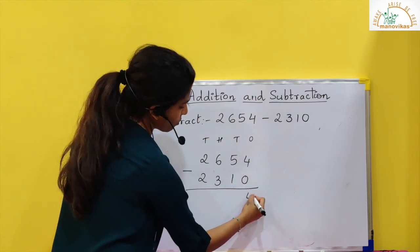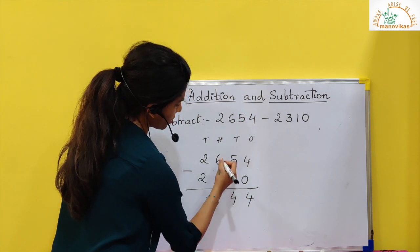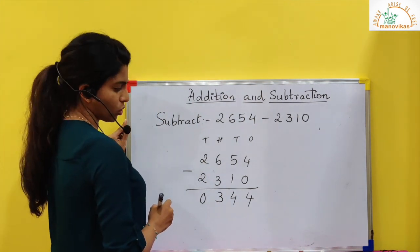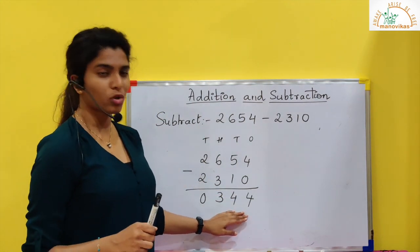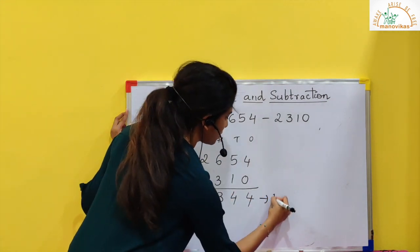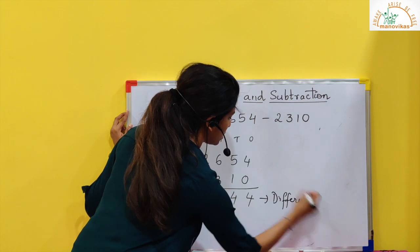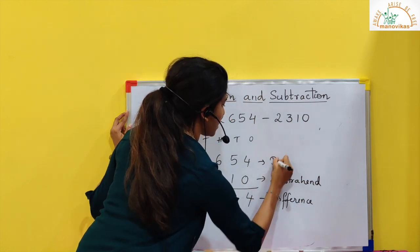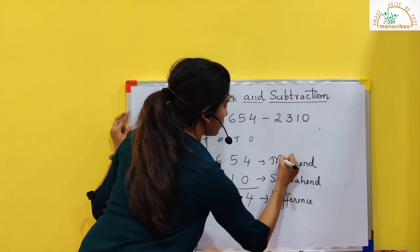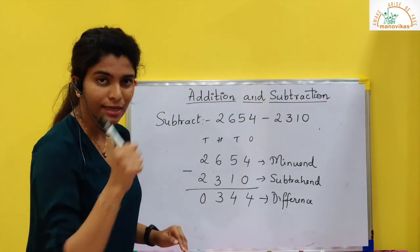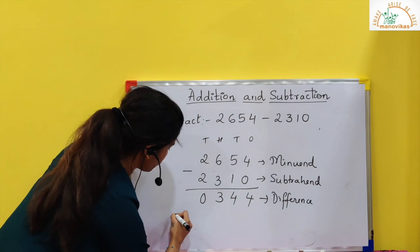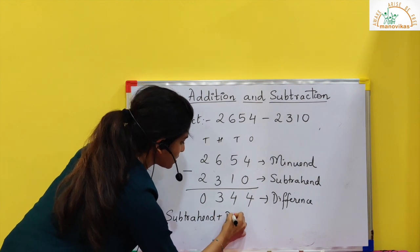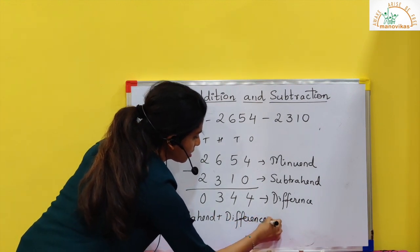4 minus 0 is 4. 5 minus 1 is 4. 6 minus 3 is 3. And 2 minus 2 is 0. This is the answer — the result. What we get is called as difference. This is called as subtraction. This is called as minuend. Now if you want to find if the answer you got is correct or not, there is one formula: subtrahend plus difference will give me minuend.